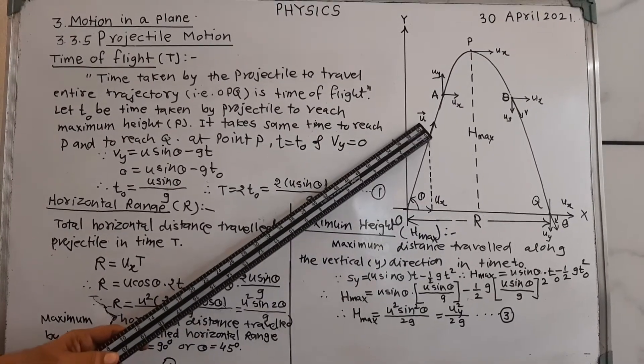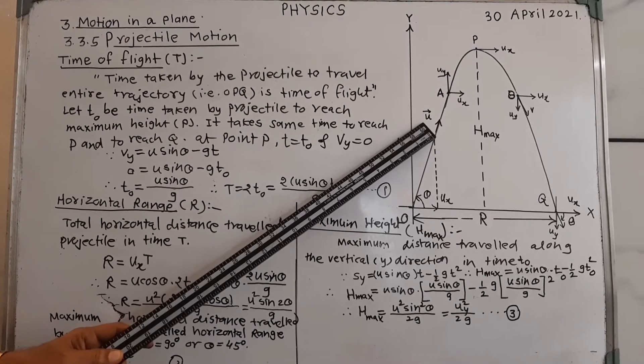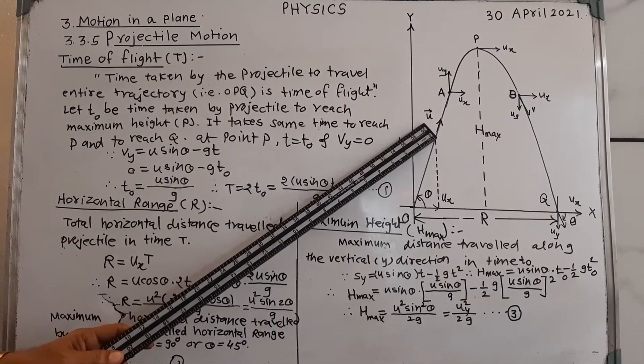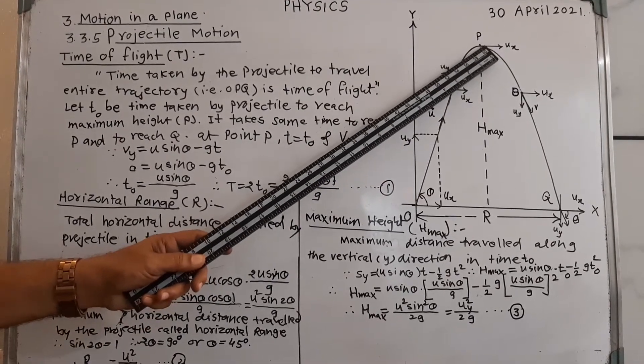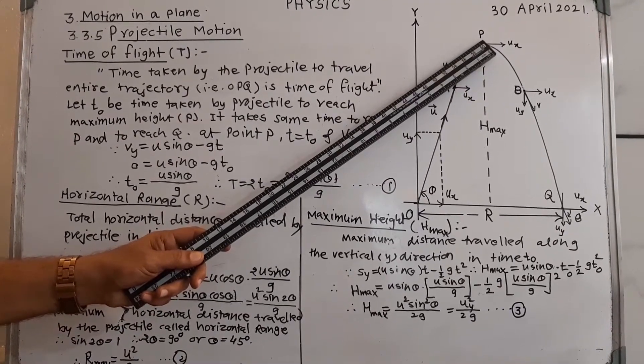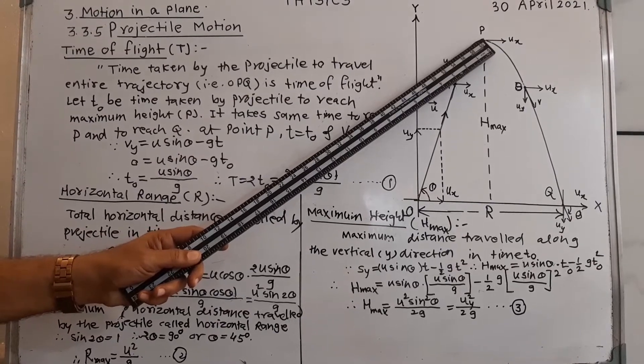The vertical velocity goes on decreasing as the projectile moves up and becomes zero at this particular point P after a certain time. At that time...